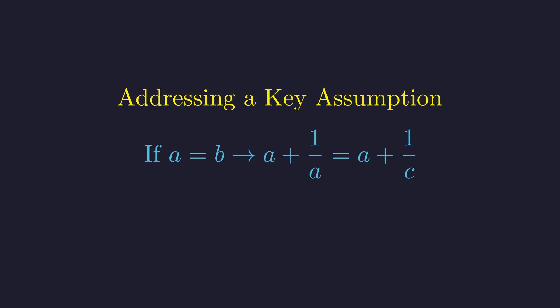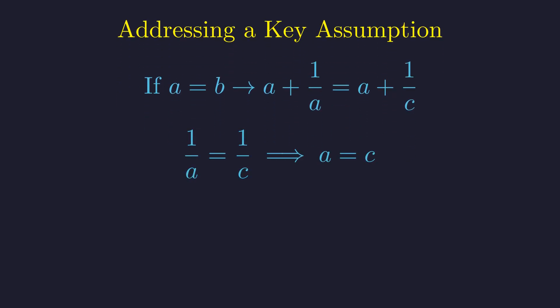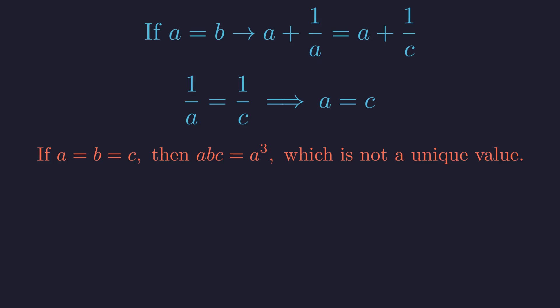Let's test it. If A equals B, we can substitute A for B in the first part of our original equation. The A terms cancel, showing that A must also equal C. This means if any two are equal, all three must be equal. In this case, ABC equals A cubed. But since A could be any non-zero number, the product would not have a single, unique value.